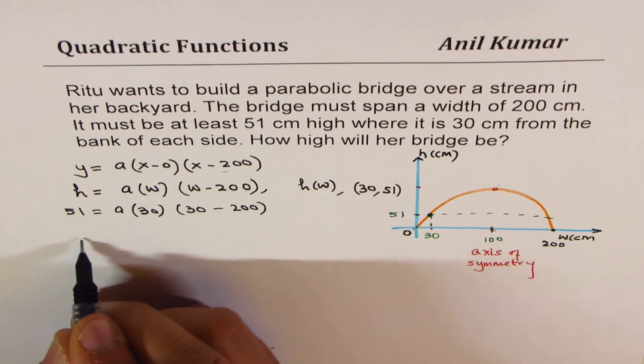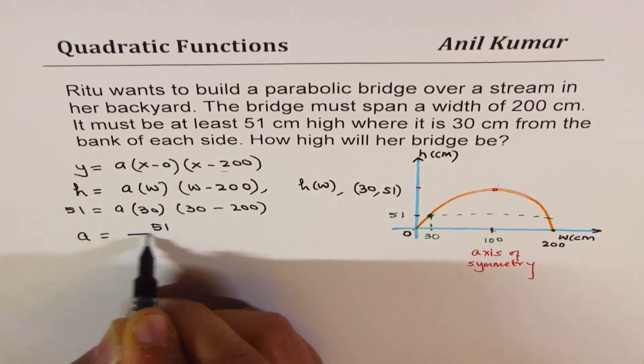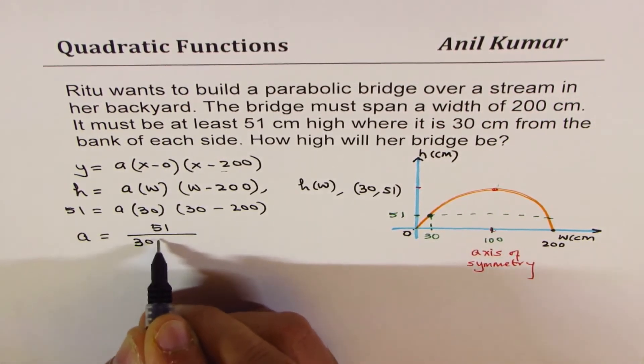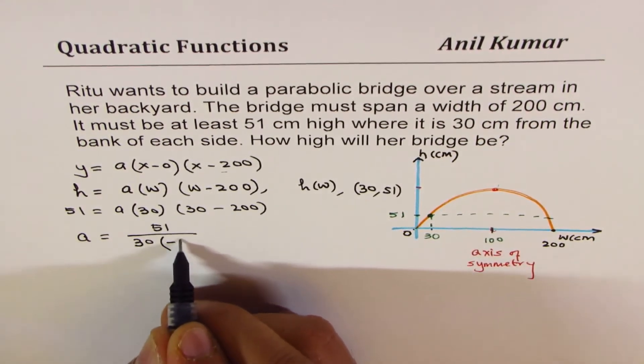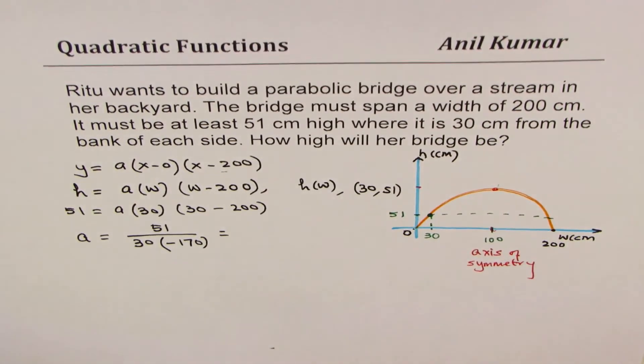You can rearrange and solve this. What do you get the value of a? a is 51 divided by 30 times, if you do 30 minus 200 you get minus 170.